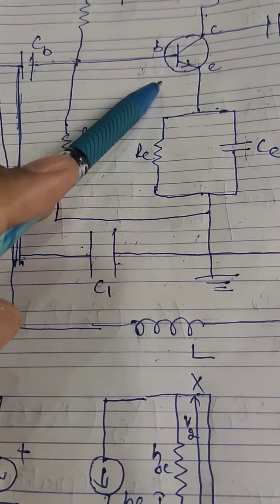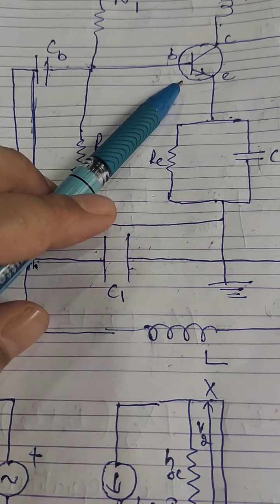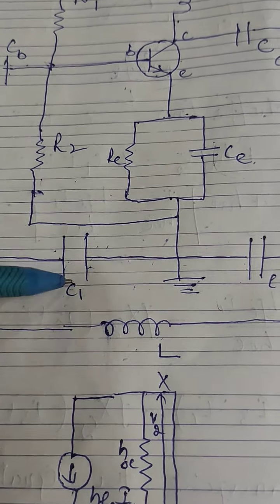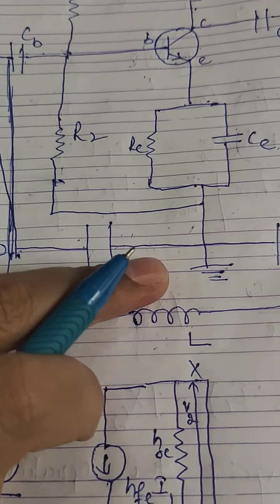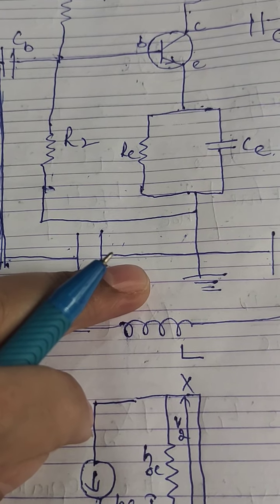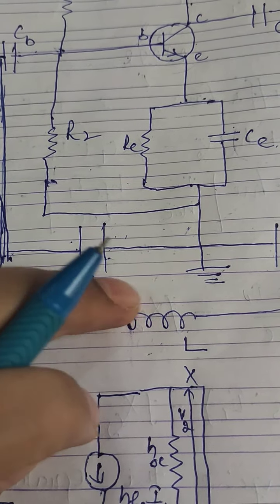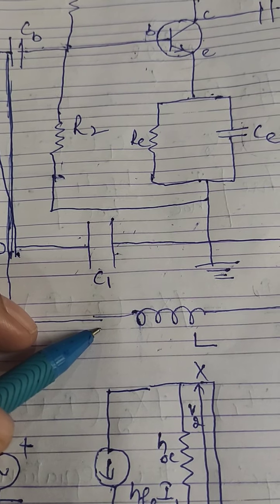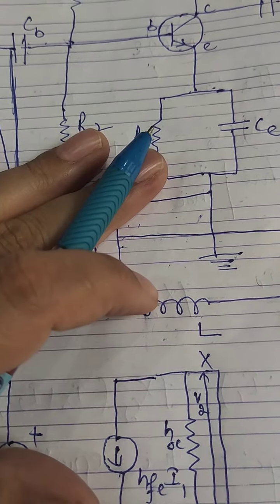Here we have used a common emitter transistor, which introduces a phase shift of 180 degrees between the input and output voltage. There are capacitors C1 and C2 between points P and Q, which also introduce a phase difference of 180 degrees because they act as alternating voltage dividers. So a total phase shift of 360 degrees appears between input and output voltage, resulting in positive feedback.